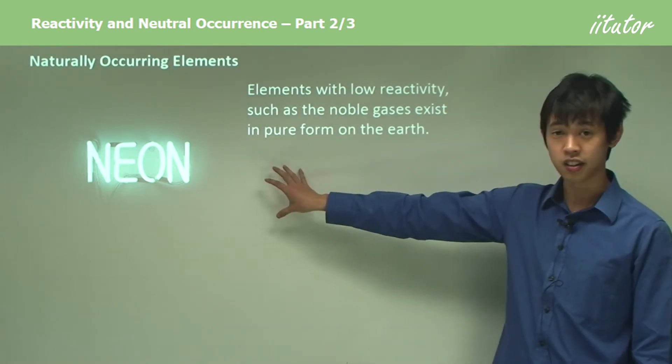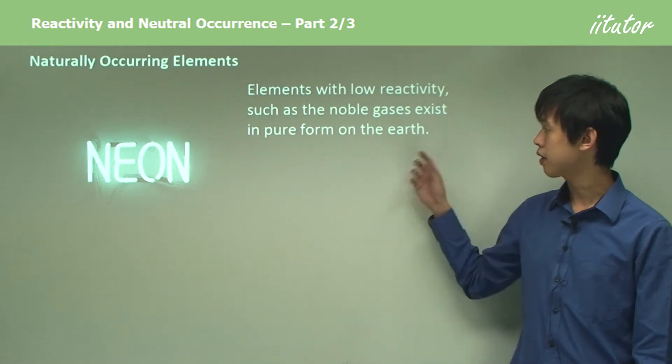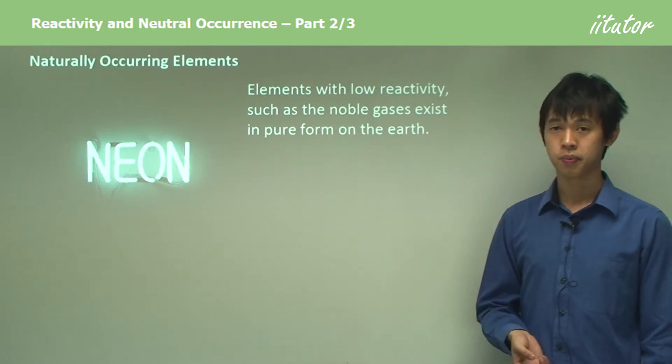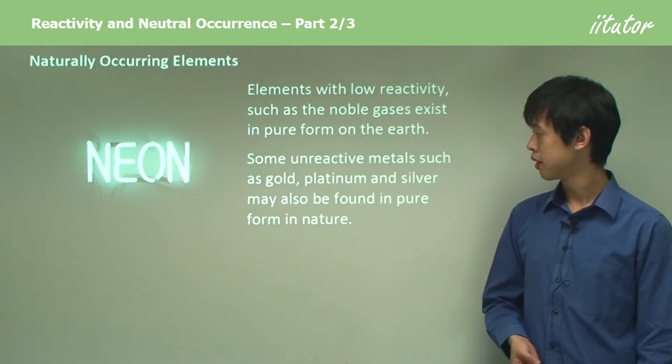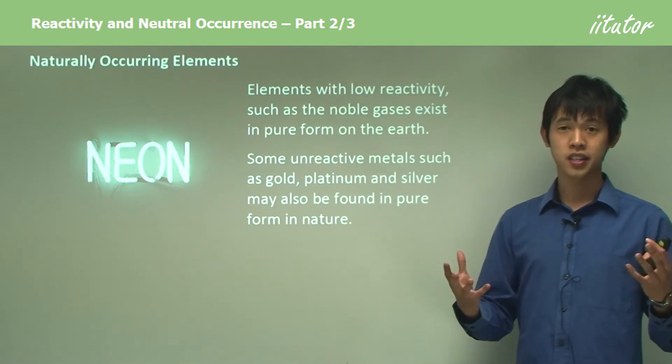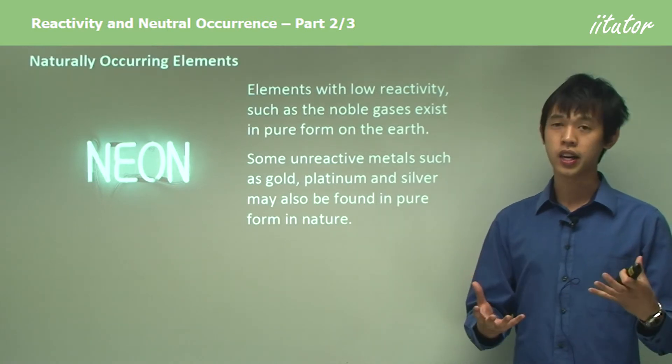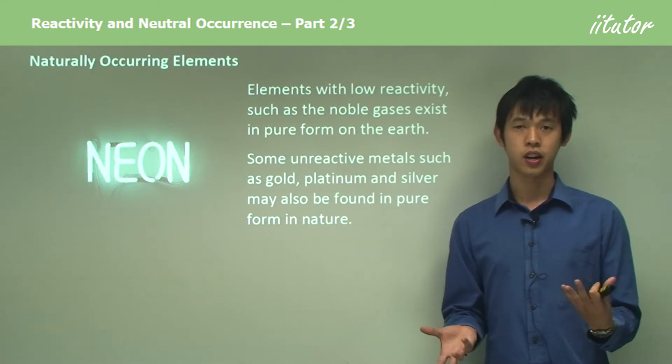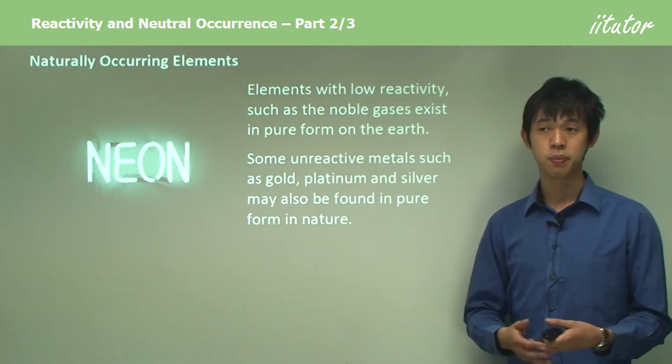Neon is a noble gas that can actually exist in pure form on the planet. Noble gases are quite prevalent; we see them quite often. For instance, neon we see all the time.